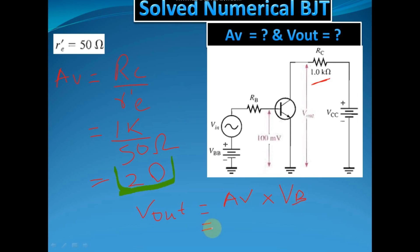You have got voltage gain, that is 20. If you multiply by Vin, how much is your Vin? You can see here this is Vin, that is given 100 millivolts. So if you multiply 20 times 100 millivolts.